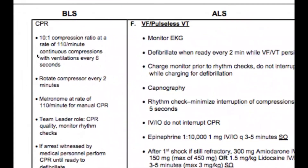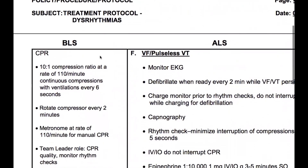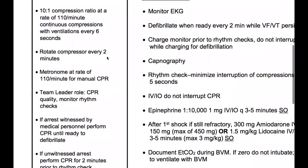Zooming in here for BLS CPR: it is no longer a 32 compression-to-ventilation ratio. It is now a 10-to-1 compression-to-ventilation ratio at a rate of 110 a minute, continuous compressions with ventilations every six seconds. You should be rotating a compressor every two minutes. Use a metronome at a rate of 110 a minute for manual CPR.